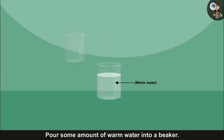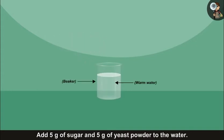To observe yeast cells under the microscope, pour some amount of warm water into a beaker. Add 5 grams of sugar and 5 grams of yeast powder to the water.